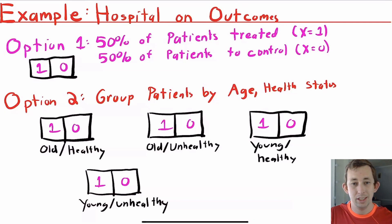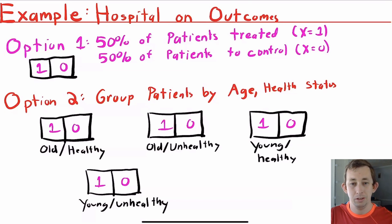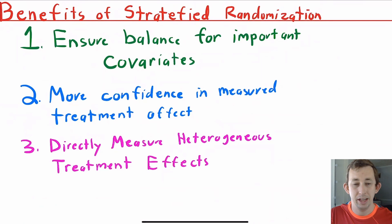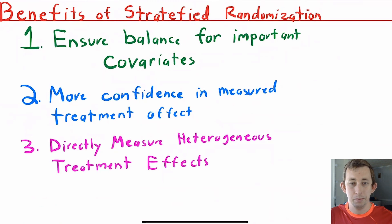But after you've drawn all the names, you have the same number of people in each group as you would have if you drew names out of one hat. But now you have done more to ensure that the old healthy group is split between the new hospital and the old hospital, same for old unhealthy, young healthy, and young unhealthy. So now you've guaranteed that the treatment and the control group are going to be comparable on both age and health status. You have prevented the case where maybe just by chance a bunch of old unhealthy people end up at the new hospital and you underestimate how effective that new hospital is. When you do the stratification, you're protecting yourself against that.